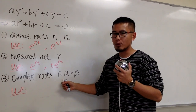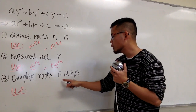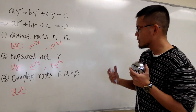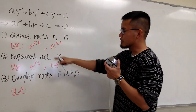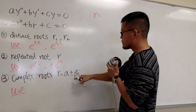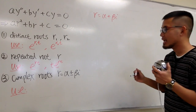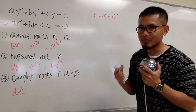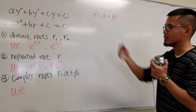The third possibility is a new one we'll see in this video: what if we end up with complex roots? I'll write this as r = α ± βi. Our goal is to figure out what the building blocks are for the solution to that differential equation when we have complex roots.